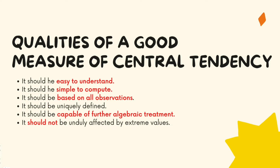To be called a good measure of central tendency, first of all, that measure should be easily understood. Computation should not be very complicated — it should be simple enough to compute. And it should represent all observations, meaning it should be based on all the observations and not just one particular observation. It should also be uniquely defined, and we should be able to further treat it algebraically — that is, use that measure of central tendency in other calculations, like using per capita income to derive taxation policies.